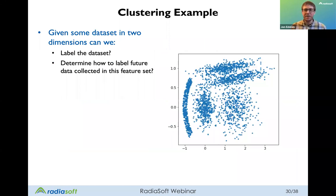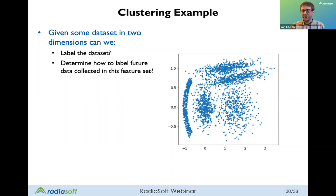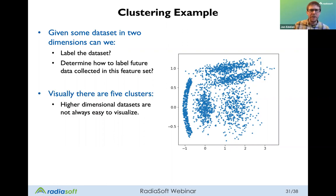Here's a two-dimensional dataset where by eye there are five clusters. The questions are: can we label the dataset, and can we understand how to label future data collected in this feature space? For example, given machine states that we know how to cluster, can we quickly say whether a new machine state belongs to a given cluster? In a two-dimensional dataset this is easy to do by eye, but in higher-dimensional datasets it's not always easy to visualize, so the algorithm output becomes more important.